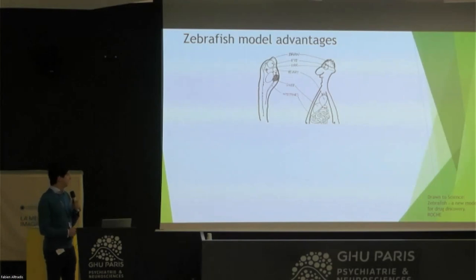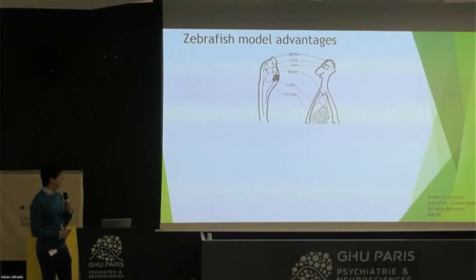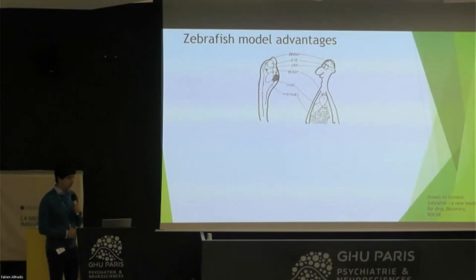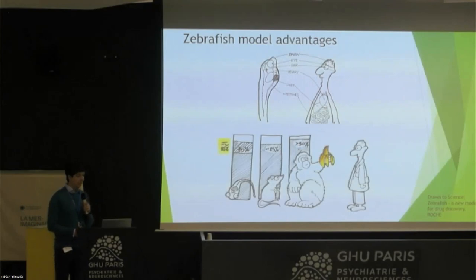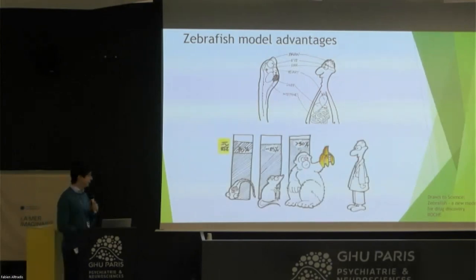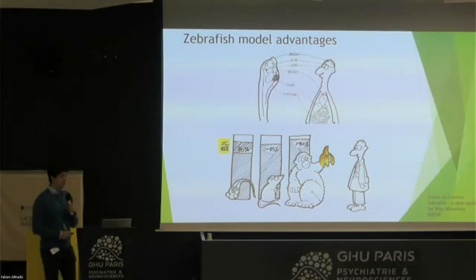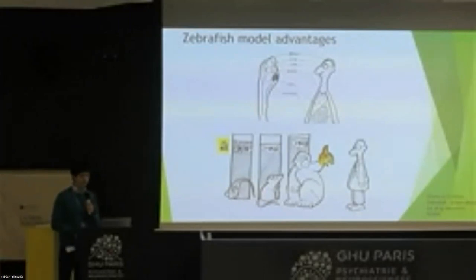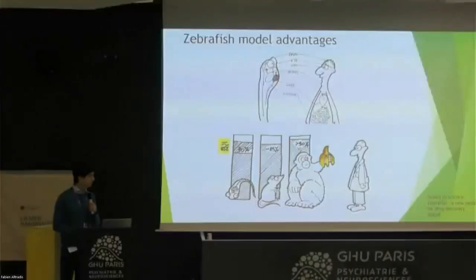We can study diseases related to the brain, eye, heart, intestine, liver, and others, because the DNA they share with humans is almost 85% when we are talking about disease-involved genes.